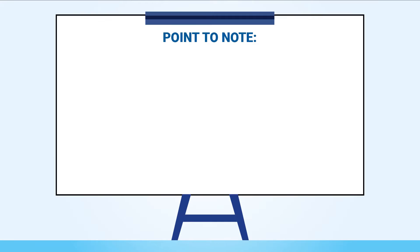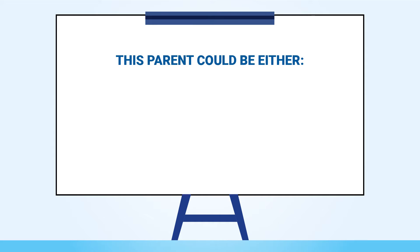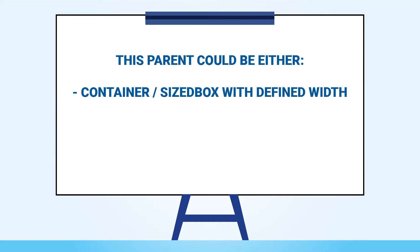A point to note: in order for text alignment to work, the text widget must have a parent with a definite width. This parent could be either a container or a sized box with a defined width, or even an expanded widget. The expanded widget is a special type of widget, so to learn more about it, check out my expanded video. Now let's go ahead and look at each of these types of alignment.